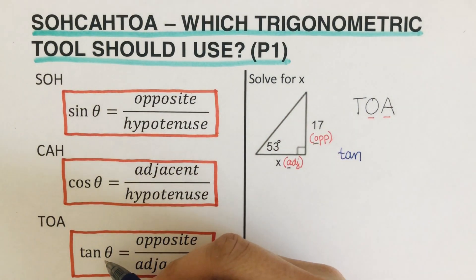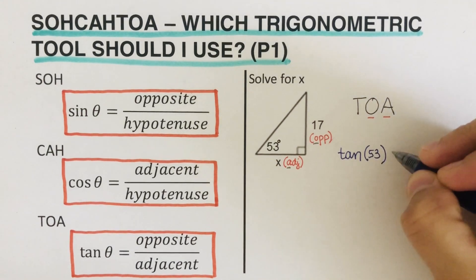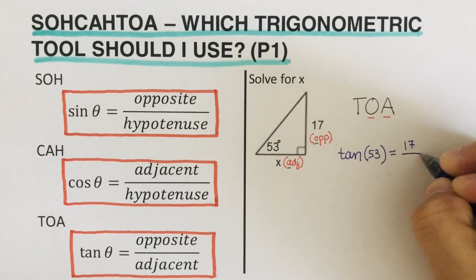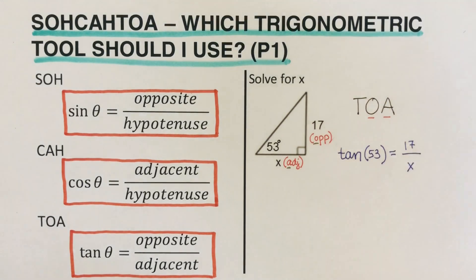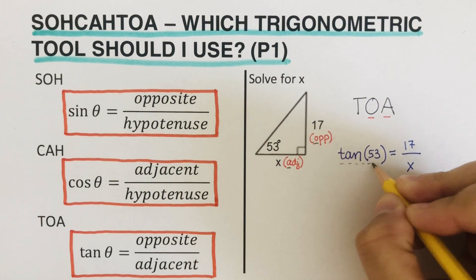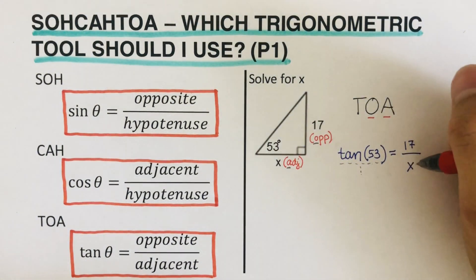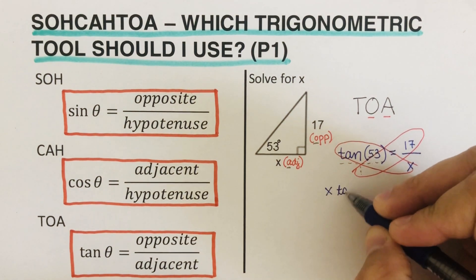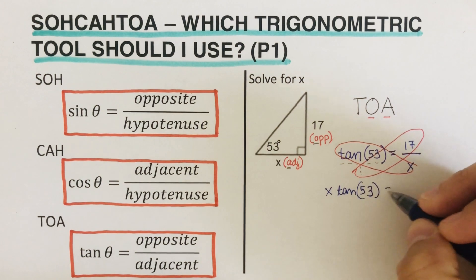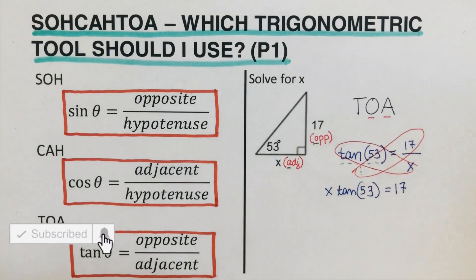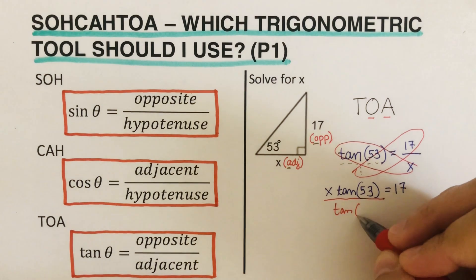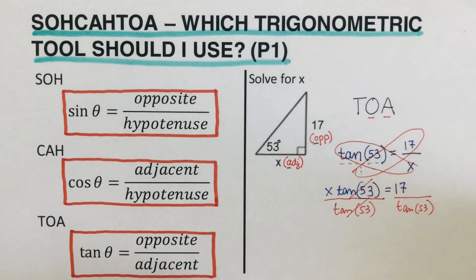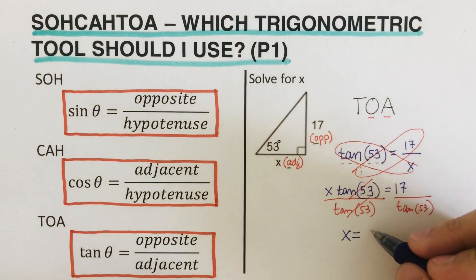We set up our equation using tangent, where theta represents the angle. So tangent of 53 degrees equals the opposite over the adjacent: that's 17 over X. Remembering there is an invisible denominator of one, we cross multiply to get X times tangent 53 equals 17. Dividing both sides by tangent 53, we get X equals 12.81.